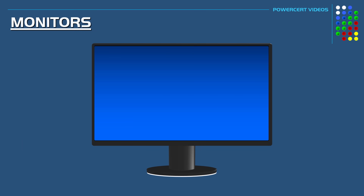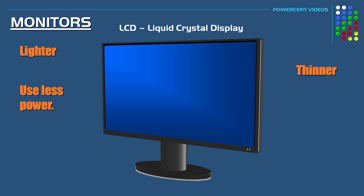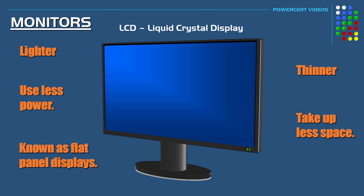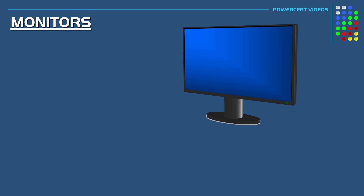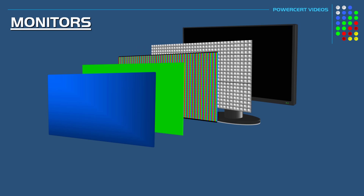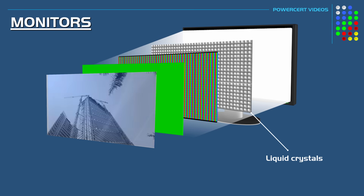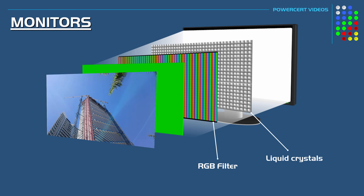Another type of monitor that has succeeded the CRT is the LCD, which stands for liquid crystal display. These monitors are lighter, thinner, use less power, and take up less space than CRTs. LCDs are also known as flat panel displays. LCD monitors produce an image on a flat surface by using liquid crystals — a backlight shines through these crystals to produce an image, using filters to produce different colors. LCDs were first used in laptop computers and are now the primary type of monitor used today for desktops.